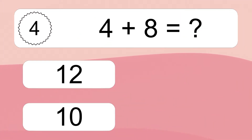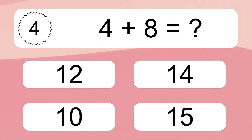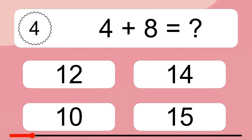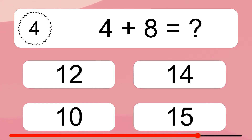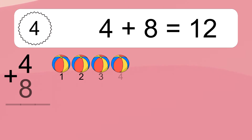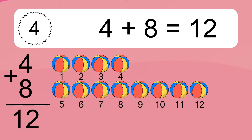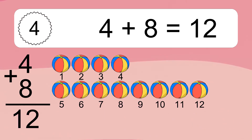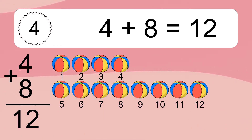4 plus 8 equals what? 4 plus 8 equals 12. Let's count it: 1, 2, 3, 4, 5, 6, 7, 8, 9, 10, 11, 12.